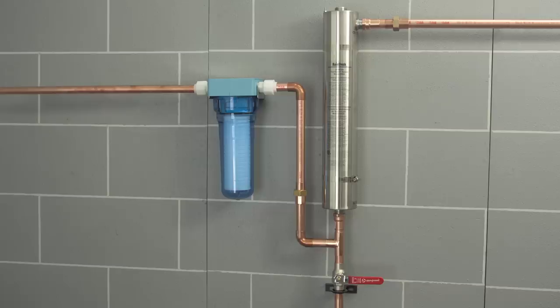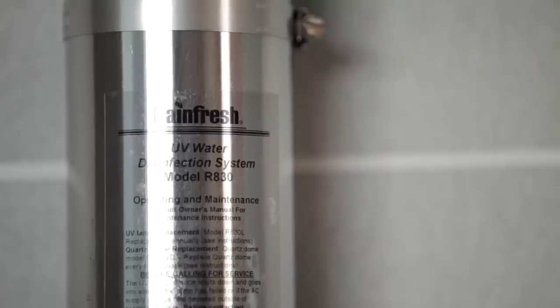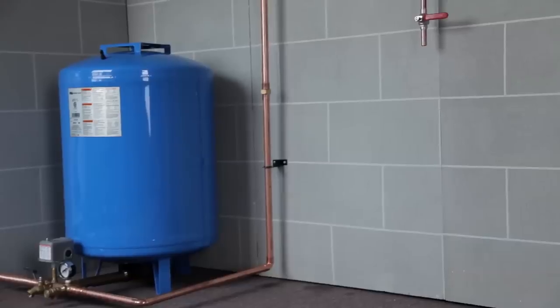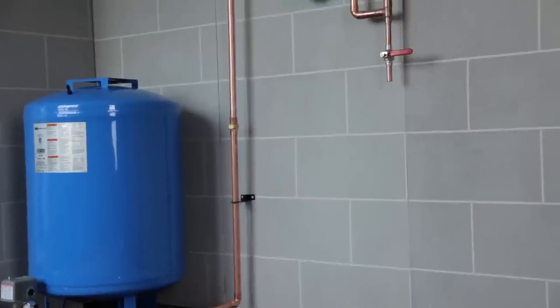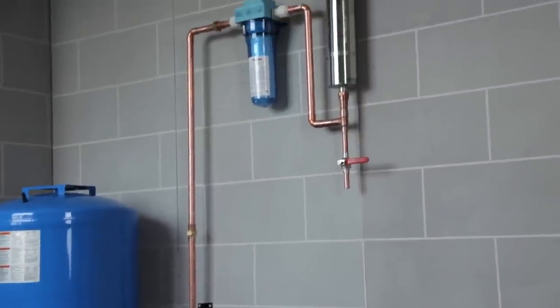The UV system disinfects all the water in the house and should be installed after your existing pressure tank. While some waters require additional pre-treatment, a 5 micron sediment filter should always be installed before the UV.